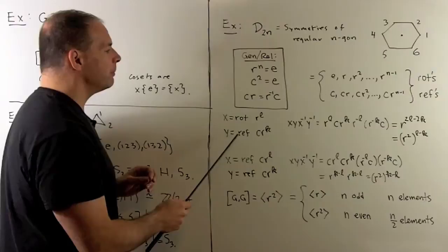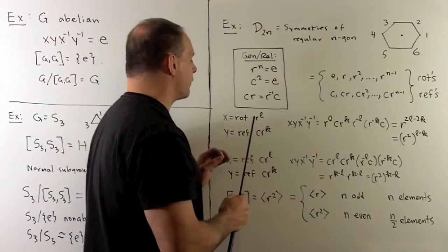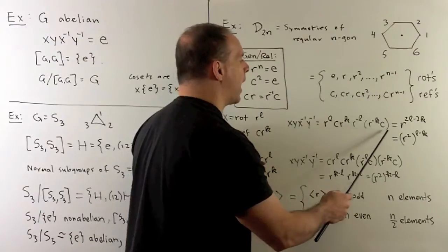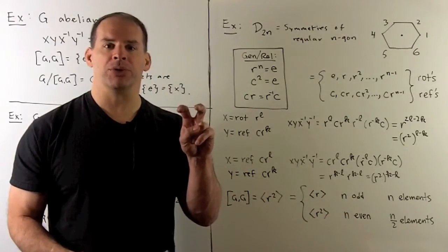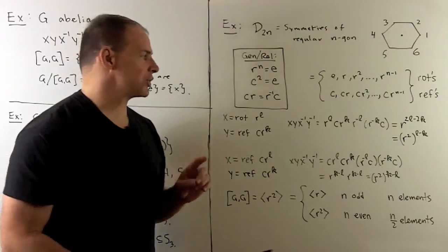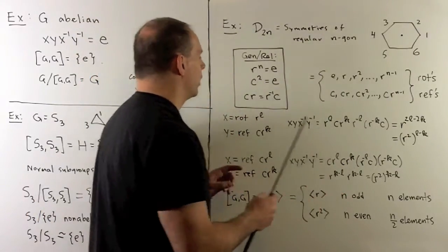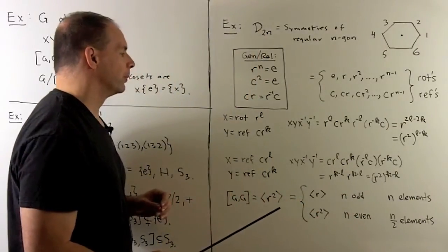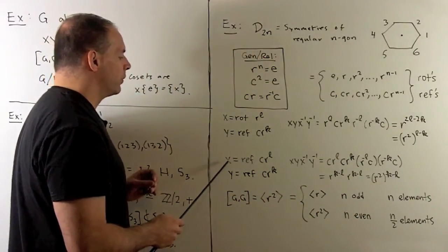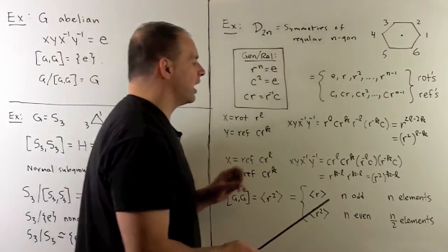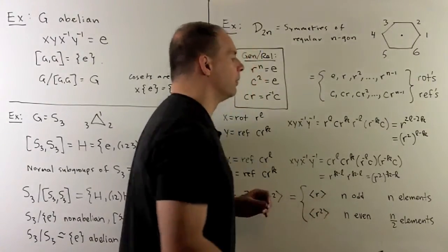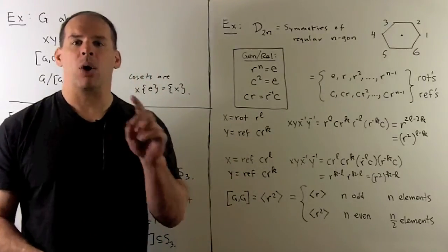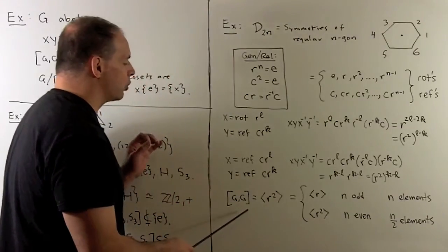If we try a rotation r to the l with a reflection c r to the k, writing out x, y, x inverse, y inverse and using the relations (noting c equals c inverse since c has order two), this collapses down to r squared raised to the l minus k power. If we consider both x and y as reflections and do the same computation, we again get r squared to the k minus l power. In either case, all commutators are powers of r squared, so the commutator subgroup is generated by r squared.